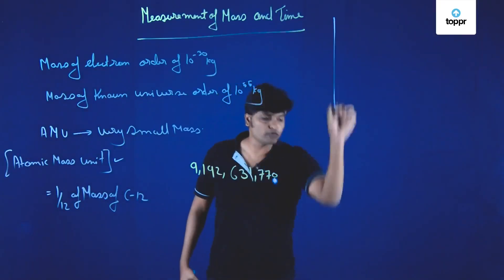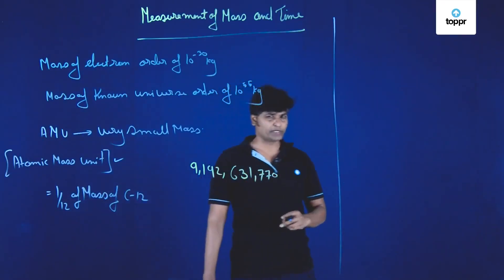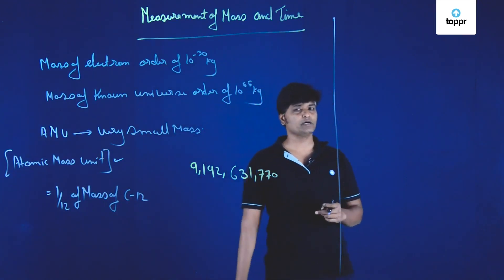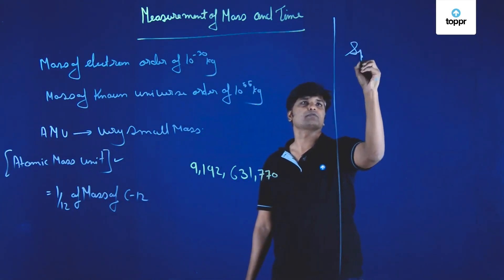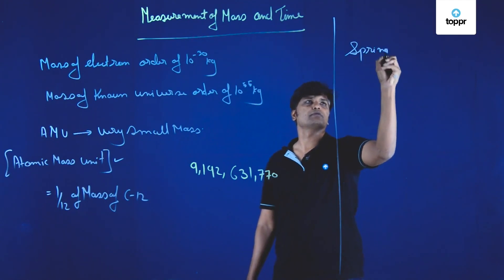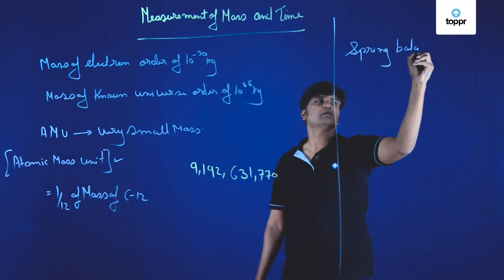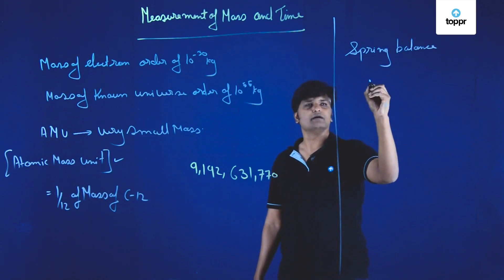Whereas the mass of commonly known objects can be measured using a spring balance and a common balance.